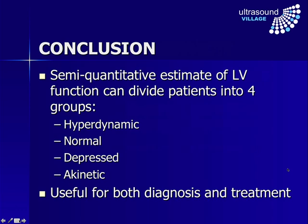In conclusion, what we're aiming to do is a semi-quantitative estimation of left ventricular function to place our patient into one of four groups: hyperdynamic left ventricle, normal left ventricle, depressed left ventricular function, or akinesis. By placing them into one of those groups, that will help both our diagnostic process to work out the underlying cause and our treatment. Thank you very much. We'll see lots more examples of these cases and these types of scenarios during the course, and we look forward to seeing you then.